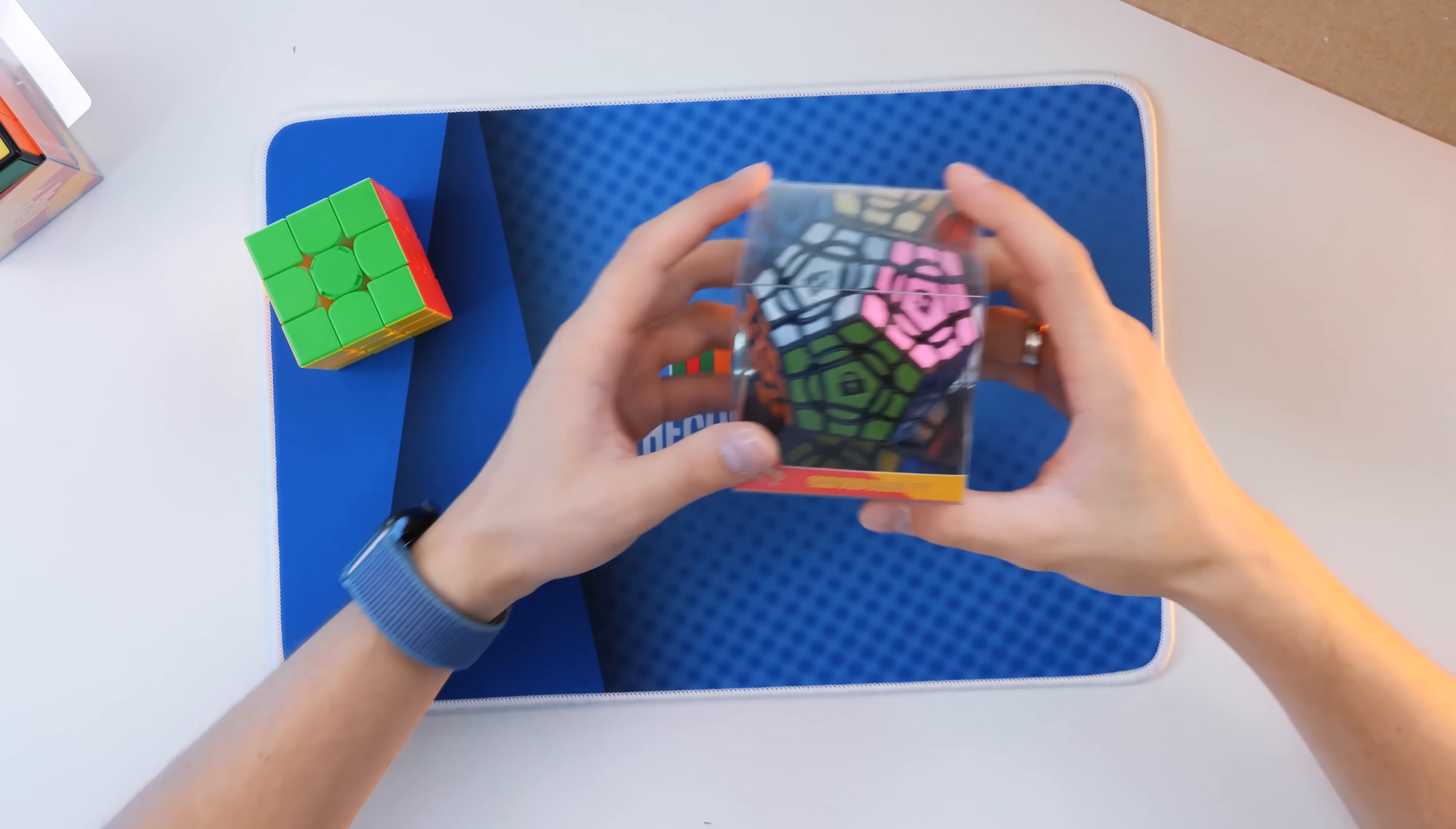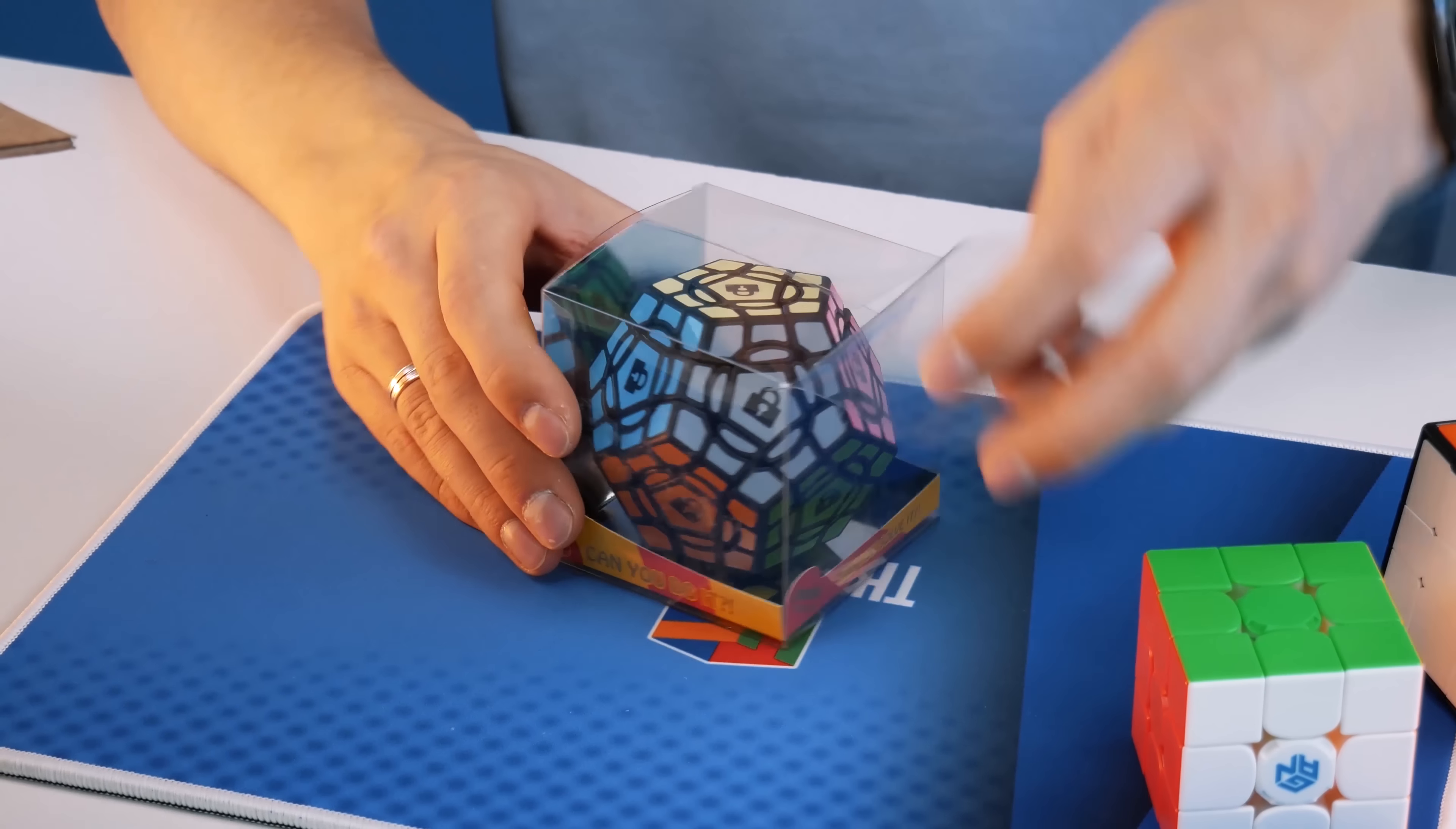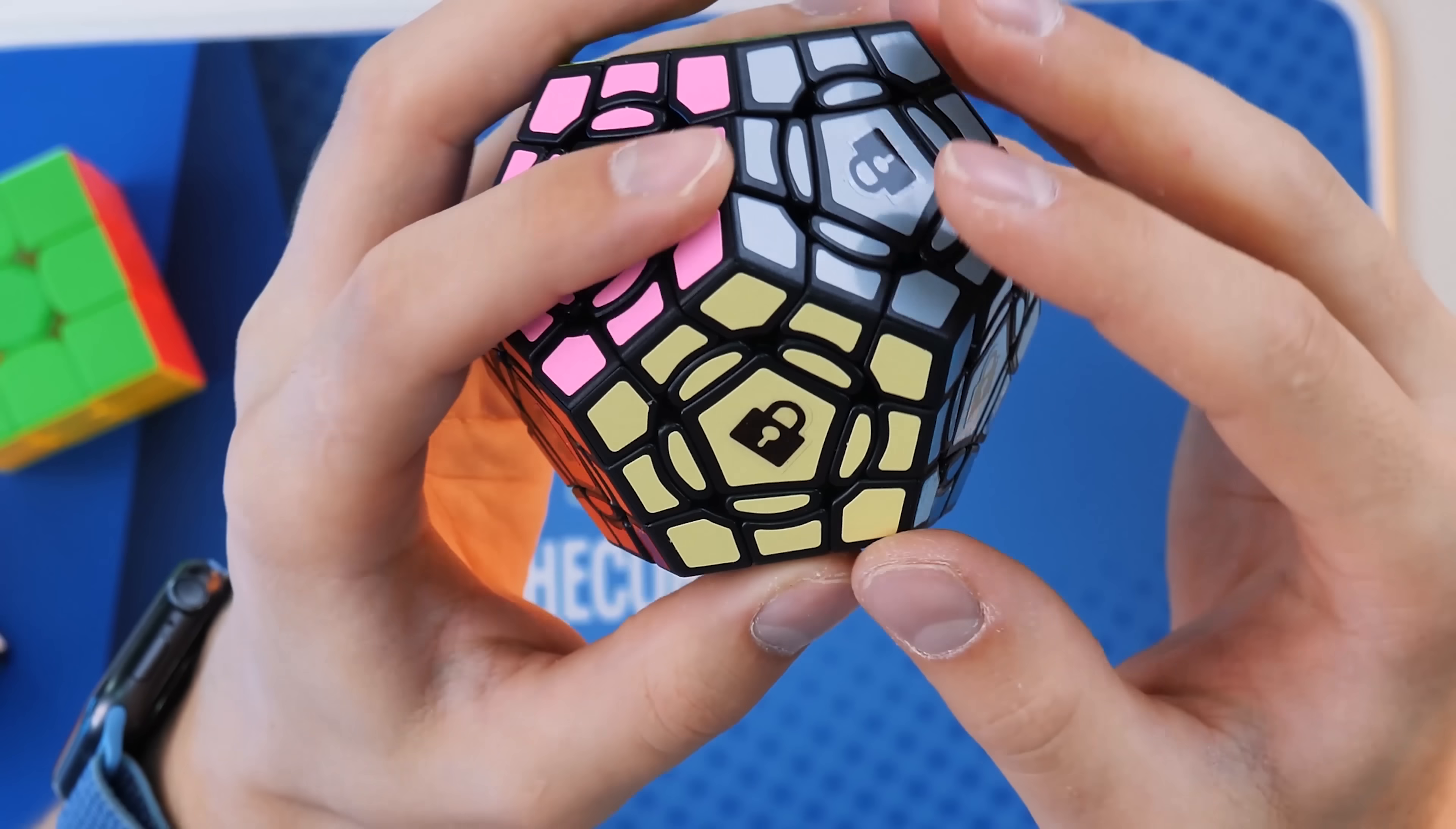But it is not all, there is something else. For example, this puzzle. This is also, look, Kelvin's puzzle. But it's not a 3x3 cube anymore, it's Megaminx. I wonder why is it so special? I already see that it doesn't look like a standard Megaminx. It has these little locks in the middle. And there is this extra round part. I feel it's supposed to be turning.